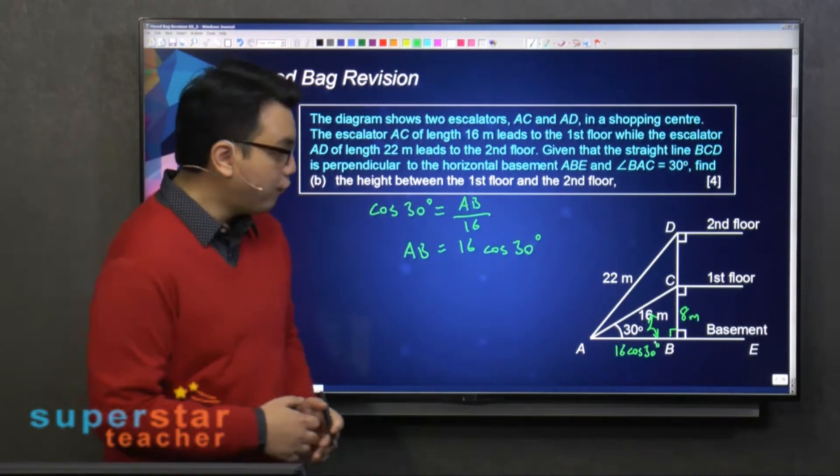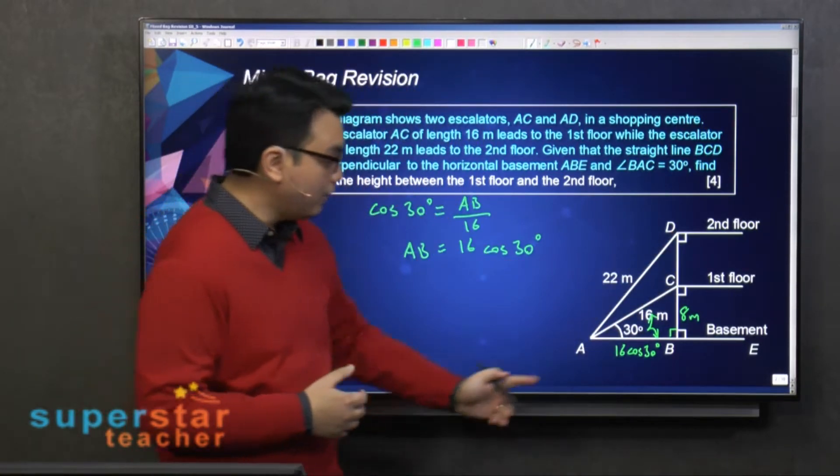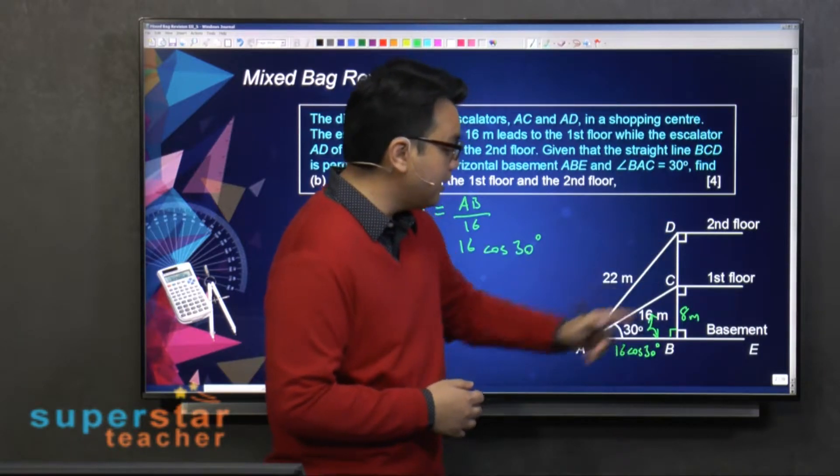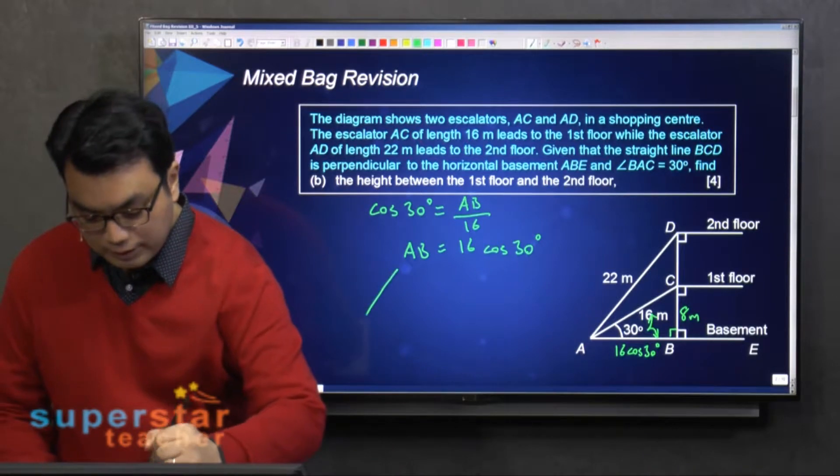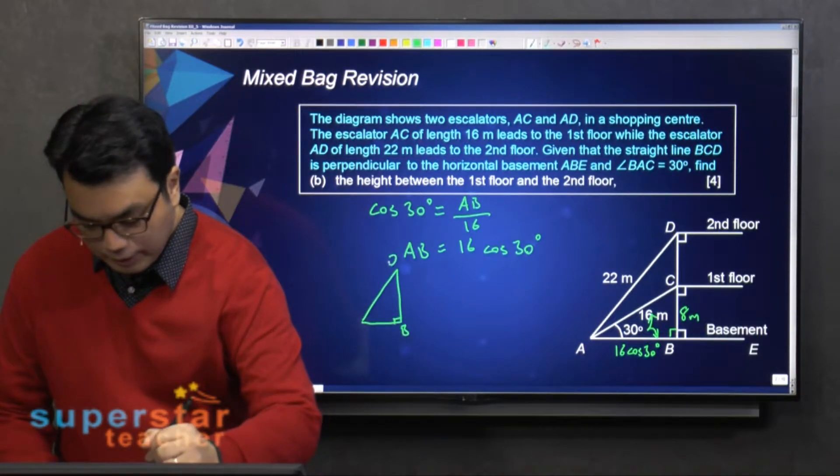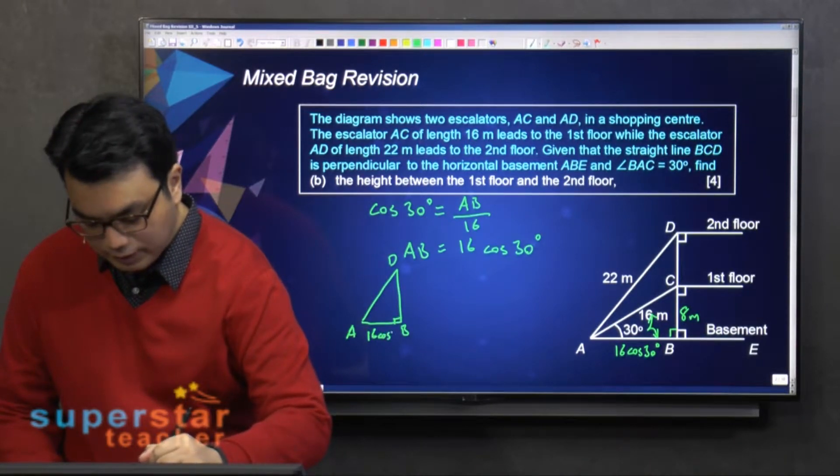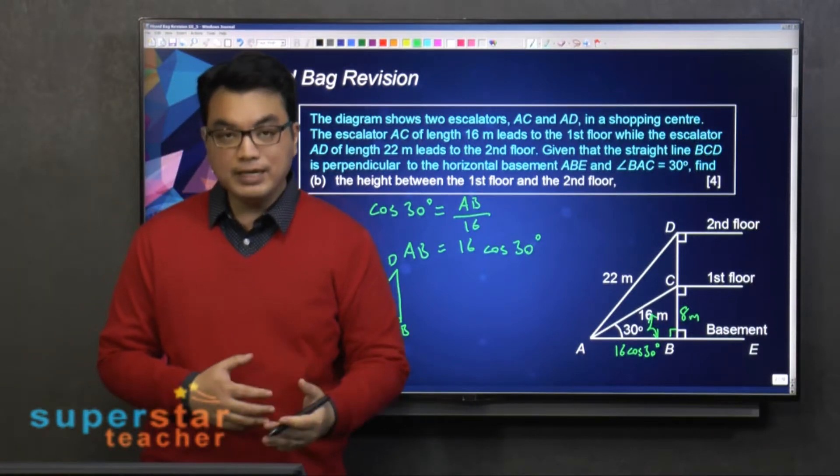And now, how to find CD? Can we just find directly? No, we can't. We have to find BD first, right? Okay, so in order to find BD, we have to use this right-angled triangle ABD. Okay? So this is 16 cosine 30 degrees. This is 22. So we have to find BD.